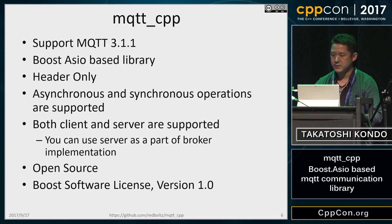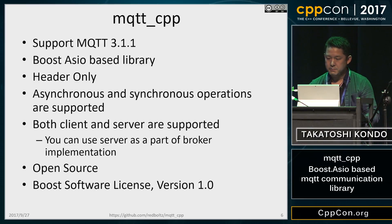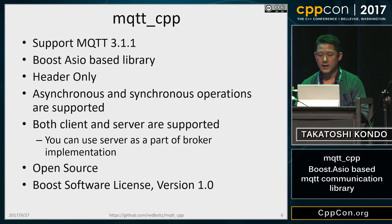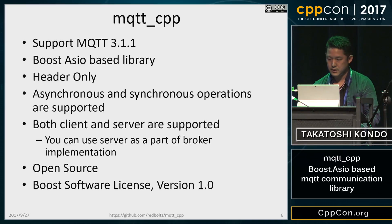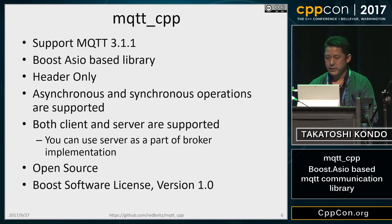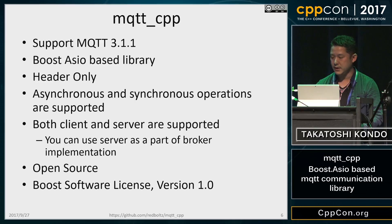In the MQTT domain, the server is called a Broker. MQTT CPP supports the newest version of the MQTT protocol, 3.1.1. I have a plan to support the next standard, MQTT 5, which is currently not yet accepted as the standard. It's a header-only library. Both asynchronous and synchronous operations are supported, like Boost Asio. You can create client applications using the client functionality, and you can also create your custom broker using the server functionality. It's open-source, Boost licensed.